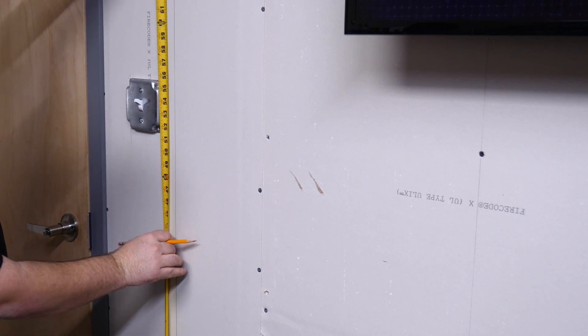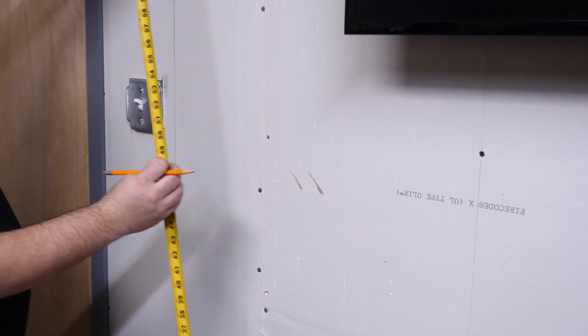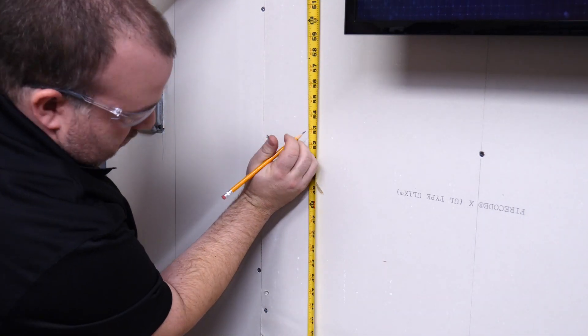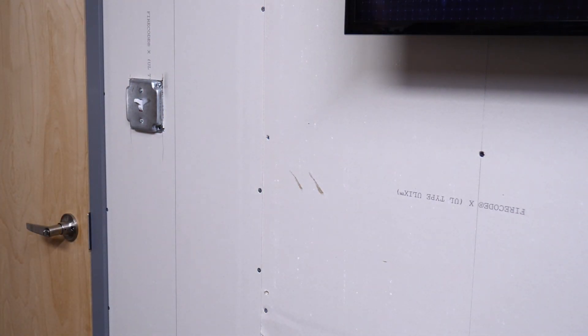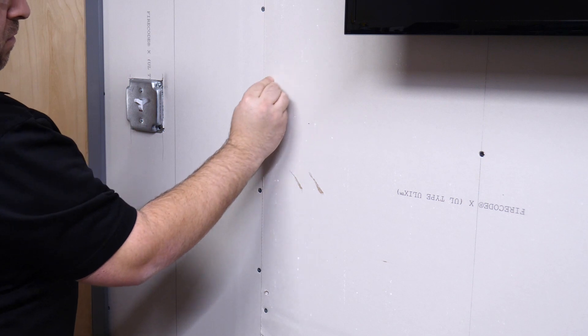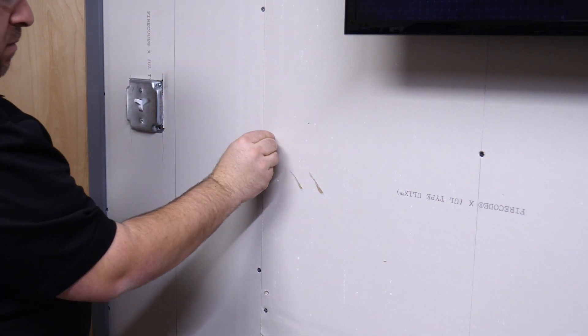The first step to installing one of these brackets is to make sure it matches any other electrical outlets or switches in the room you're working in. Typically, these are 18 inches off the floor for outlet height or 48 inches for switch height, but this can vary room to room, building to building.